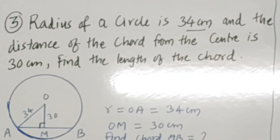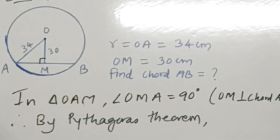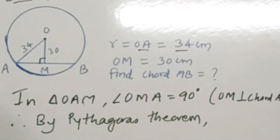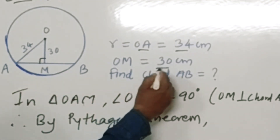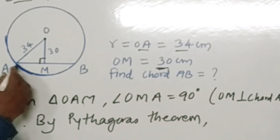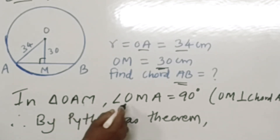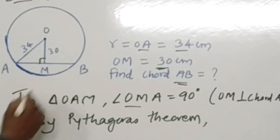Third example: the radius of the circle is 34 cm and the distance of chord AB from the center is 30 cm. Find the length of the chord. Consider circle with center O and chord AB. Given: OA = 34 cm and OM = 30 cm. We need to find the length of chord AB. In triangle OMA, angle OMA = 90° since OM is perpendicular to AB.